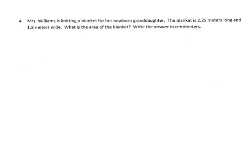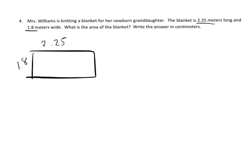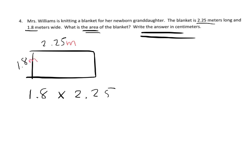Mrs. Williams is knitting a blanket for her newborn granddaughter. The blanket is 2.25 meters long and 1.8 meters wide. We're going to multiply 1.8 times 2.25, but the answer needs to be in centimeters. So let's convert: 2.25 meters equals 225 centimeters, and 1.8 meters equals 180 centimeters. Now we're free to multiply 180 times 225.